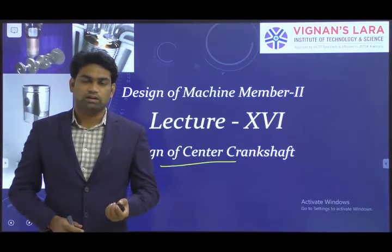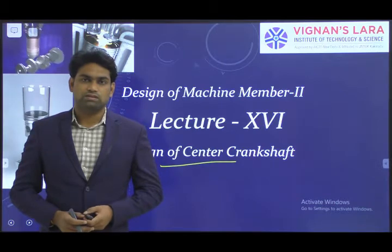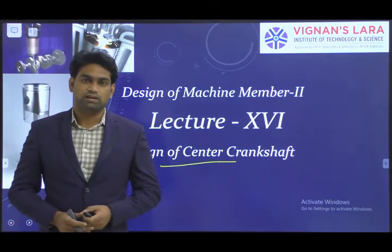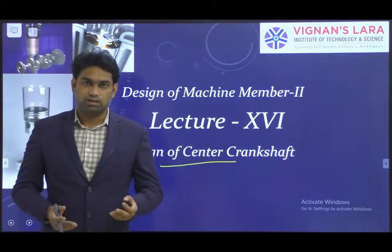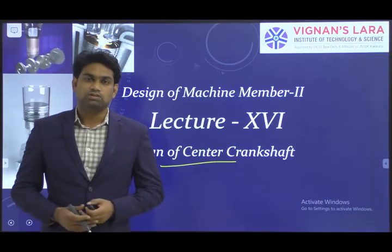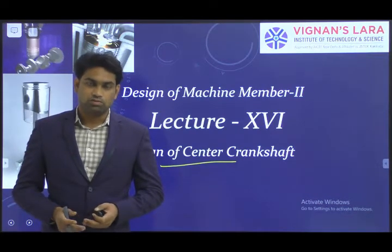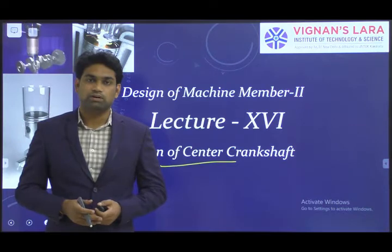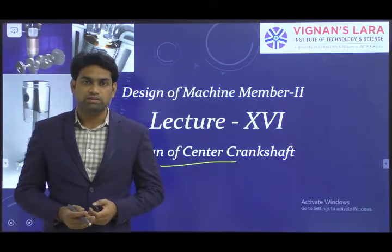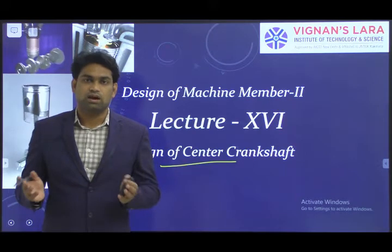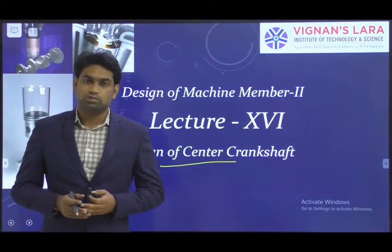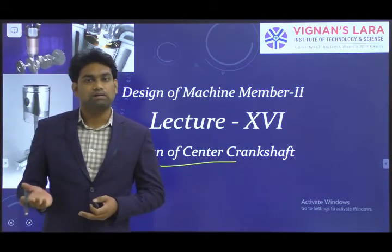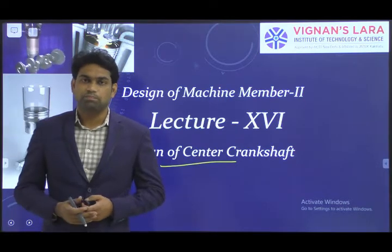In the center crankshaft, you have three components: one is the crank pin, another one is the web, and another one is the main journal. We have taken the consideration that the total crankshaft is considered as a simply supported beam, supported at the main journals. The crank pin is supported by means of two webs and two main journals. The total load acting on the crank pin is equally distributed among the two webs and the main journals.